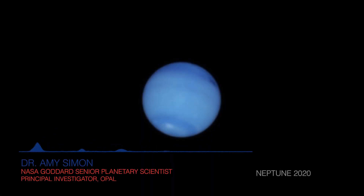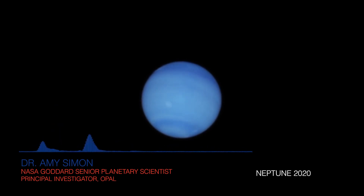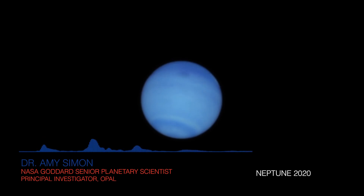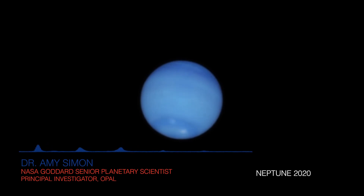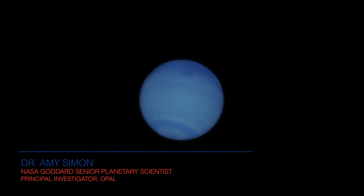The latest image of Neptune is really interesting to me because we don't see those bright white clouds we've been seeing the last few years. As a matter of fact, the only thing we see in that particular image is this great dark spot. In a lot of ways it brings us around full circle, because this looks so much like the Voyager image from 1989. And that was pretty surprising to me — not to see as much cloud activity as we've been seeing in previous years.